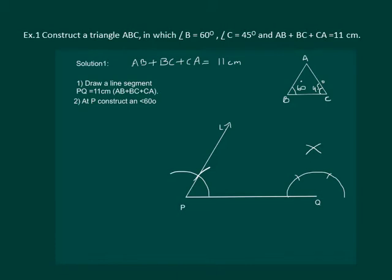Also construct a 45 degree angle at point Q. For that, let us first construct a 90 degree angle and then bisect it. So now we have a 45 degree angle at point Q.